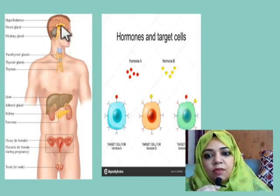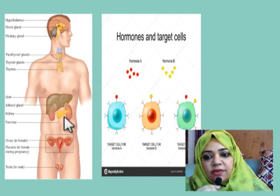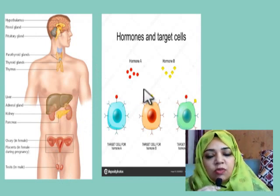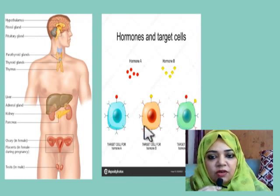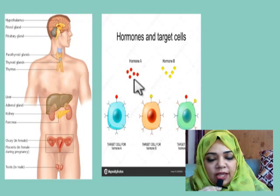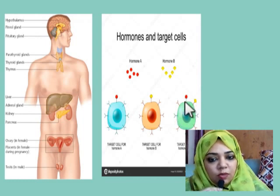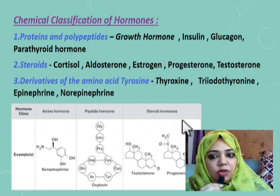You can see in this diagram the endocrine glands in our body. Starting from above: the hypothalamus, the pituitary gland, the thyroid, parathyroid gland, the islets of Langerhans of the pancreas, the adrenal gland, and in females the ovaries and in males the testes. When these glands secrete hormones, the hormones go and affect their target cells. For example, a cell may have receptors for hormone A but not hormone B, so only hormone A will act on it, while another cell with receptors for both hormones will respond to both.